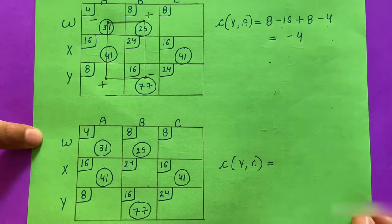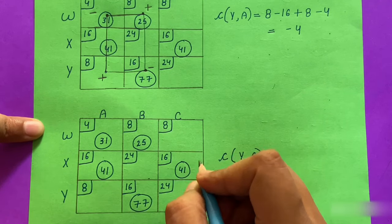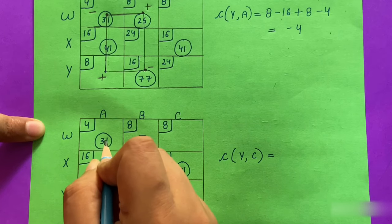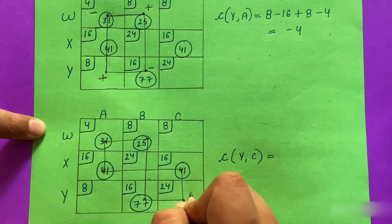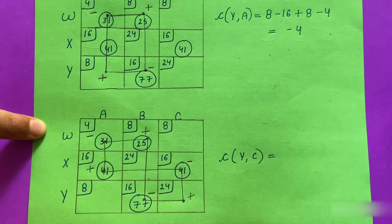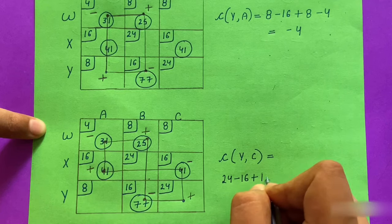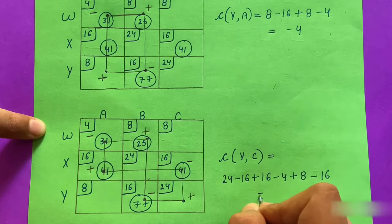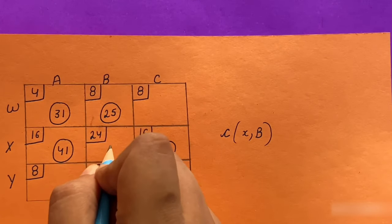For the YC cell, we trace the closed path through multiple stone squares and assign plus and minus signs alternately: improvement index = 24 − 16 + 16 − 4 + 8 − 16 = +12. For the XB cell, we trace its loop and assign signs: improvement index = 24 − 8 + 4 − 16 = +4.